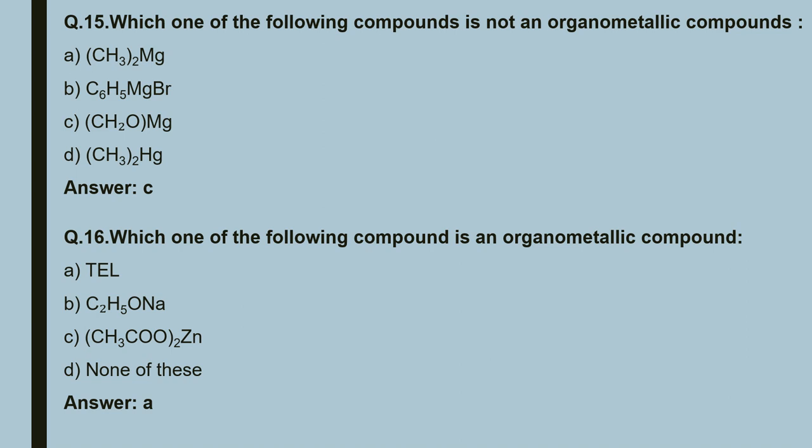Question 16: which one of the following is an organometallic compound? Options: TEL (tetraethyl lead), C₂H₅ONa, CH₃CO₂Zn, none of these. The correct answer is A — TEL is an organometallic compound.